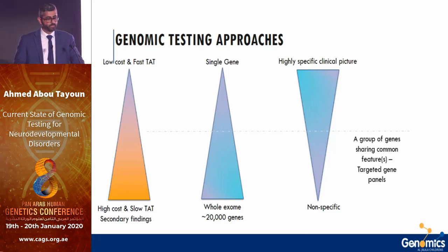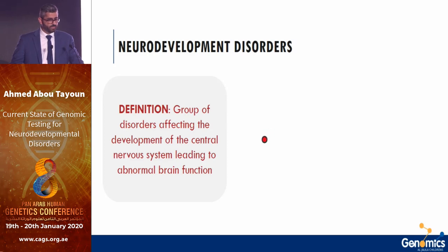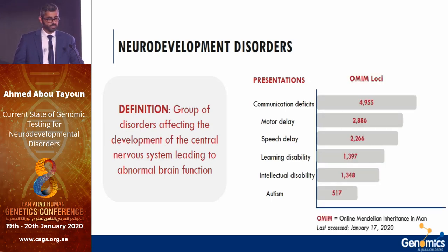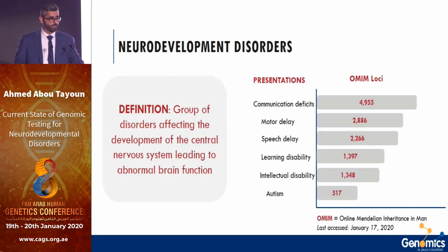Where does neurodevelopmental disease fit in this genomic diagnostic landscape? Neurodevelopmental disorders are a group of diseases affecting the development of the central nervous system leading to abnormal brain function. They can present as motor delay, speech delay, communication deficits, learning disabilities, intellectual disabilities, autism, among many other features. Searching any of these terms in OMIM yields hundreds to thousands of loci, which could be due to chromosomal mutations like copy number variants, chromosomal rearrangements, or single gene disorders.